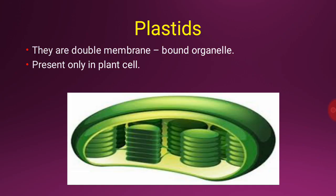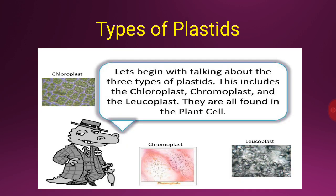The last organelle is plastids. Plastids are double membrane-bound organelles which are found only in plant cells. The plastids are of three types: chloroplast, chromoplast, and leukoplast. Students, remember — plastids are found in plant cells only.